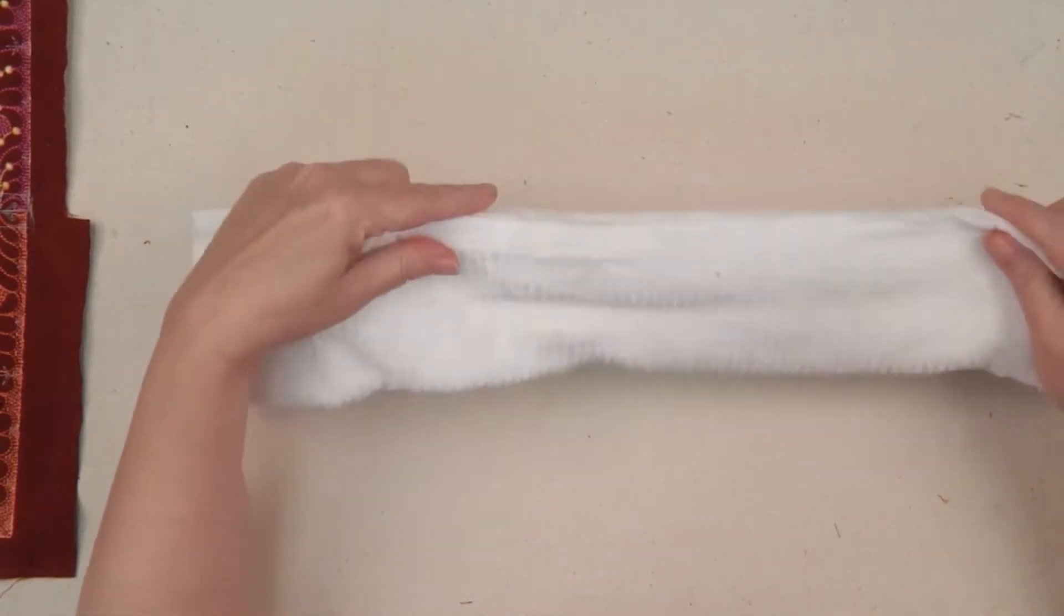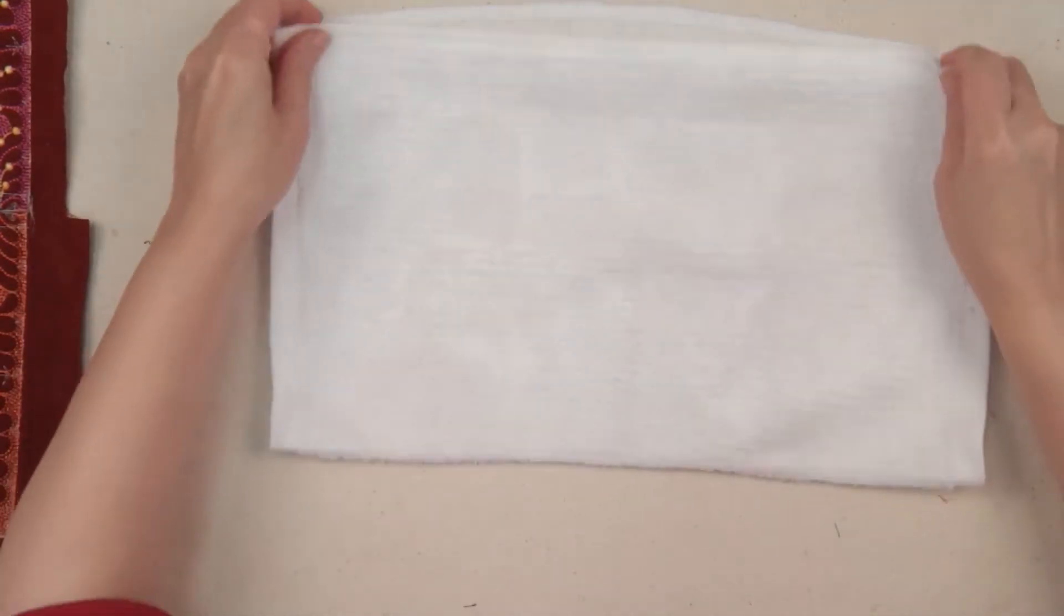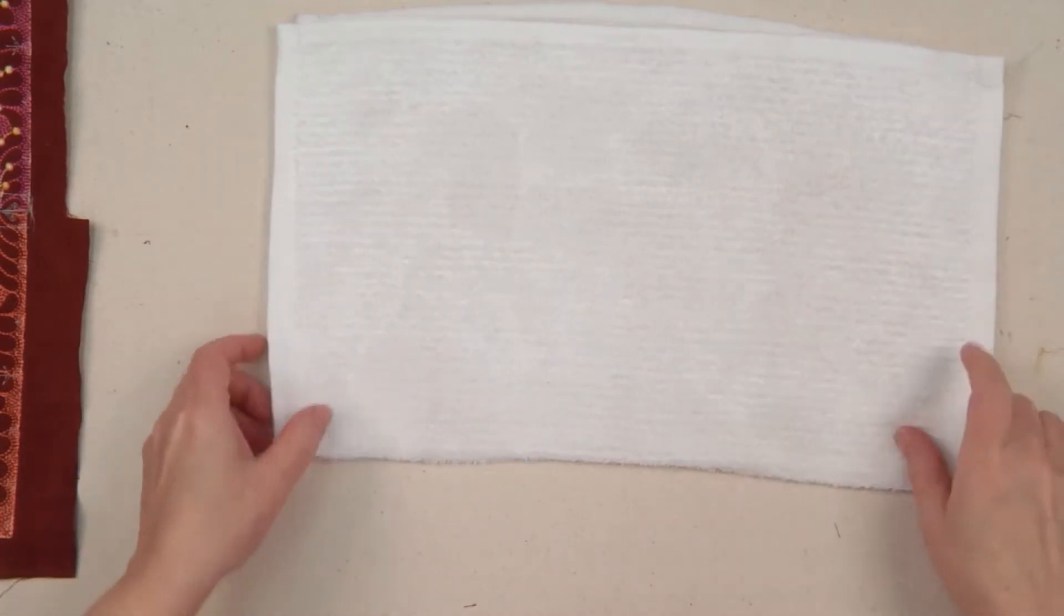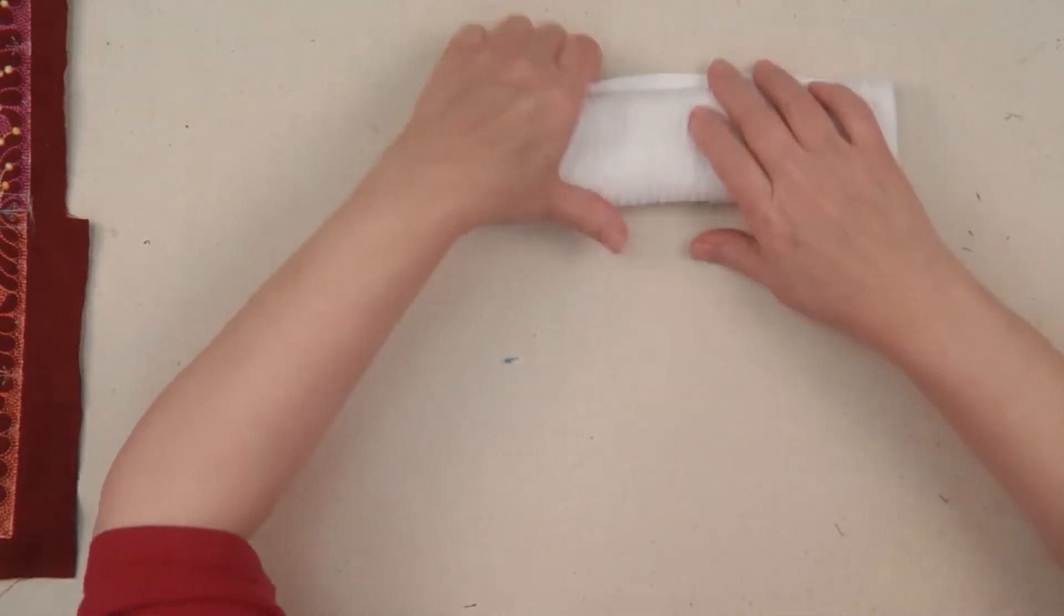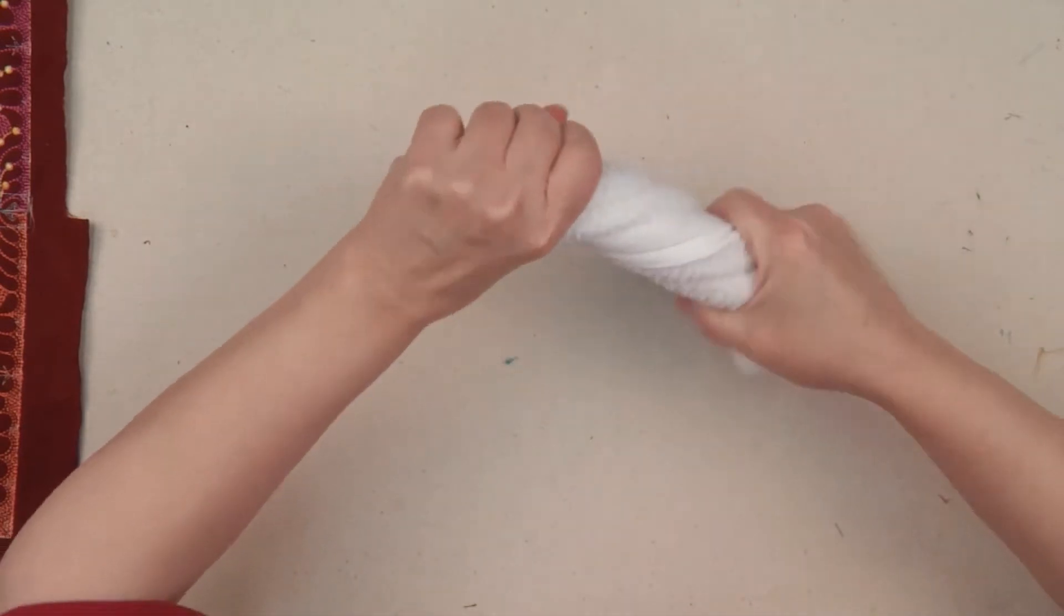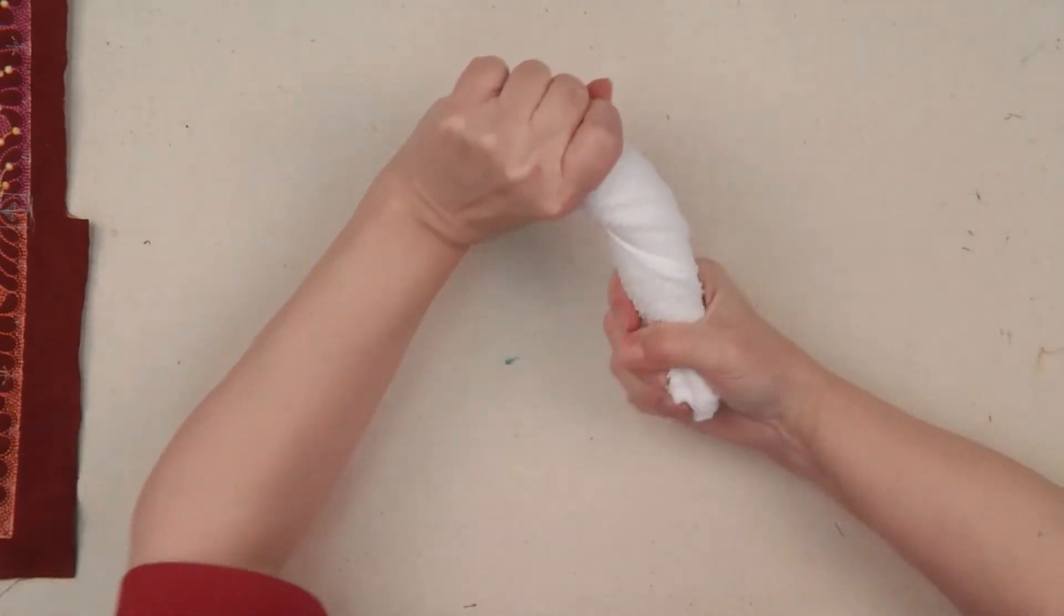Then I fold it in half and put the dry part of the towel to the inside, and then I wring it again. What happens is that excess moisture that would cause you a problem now goes into the dry side of the towel.